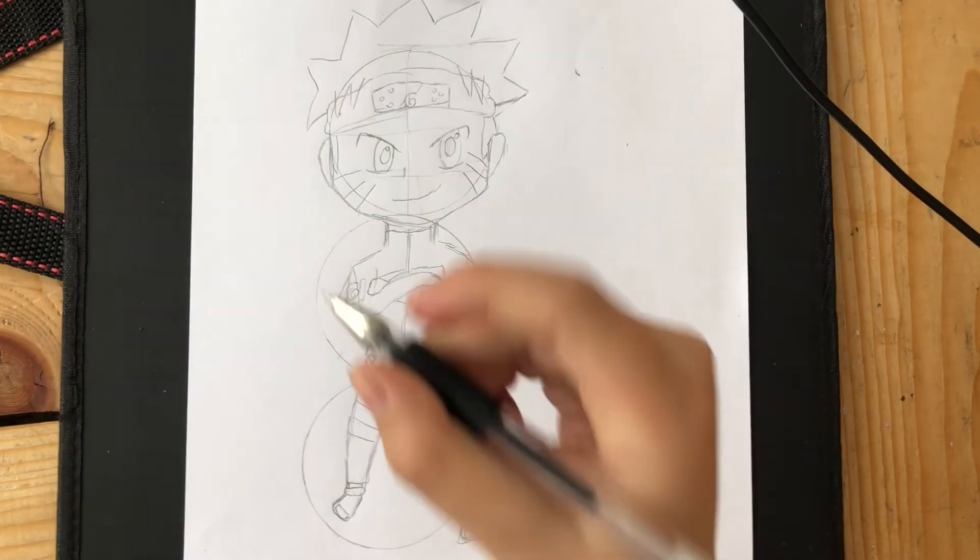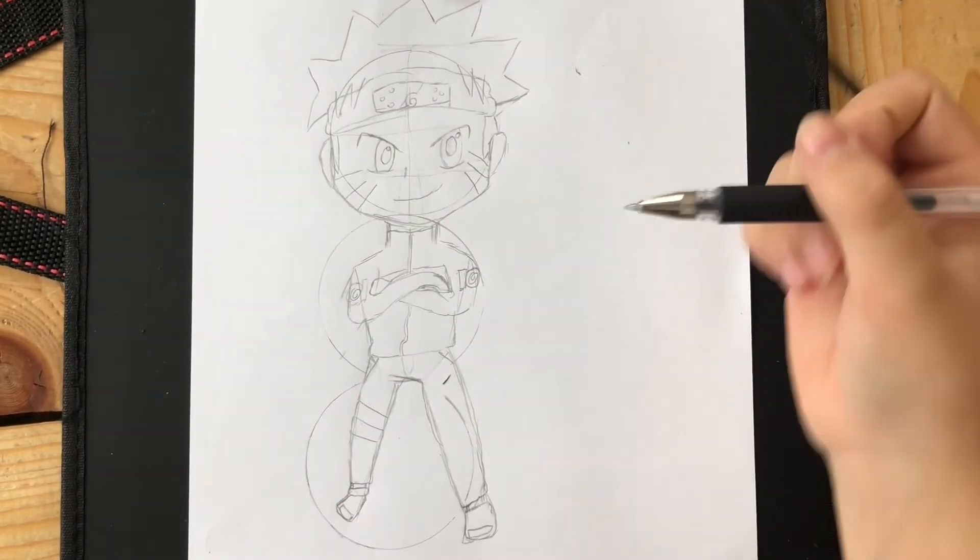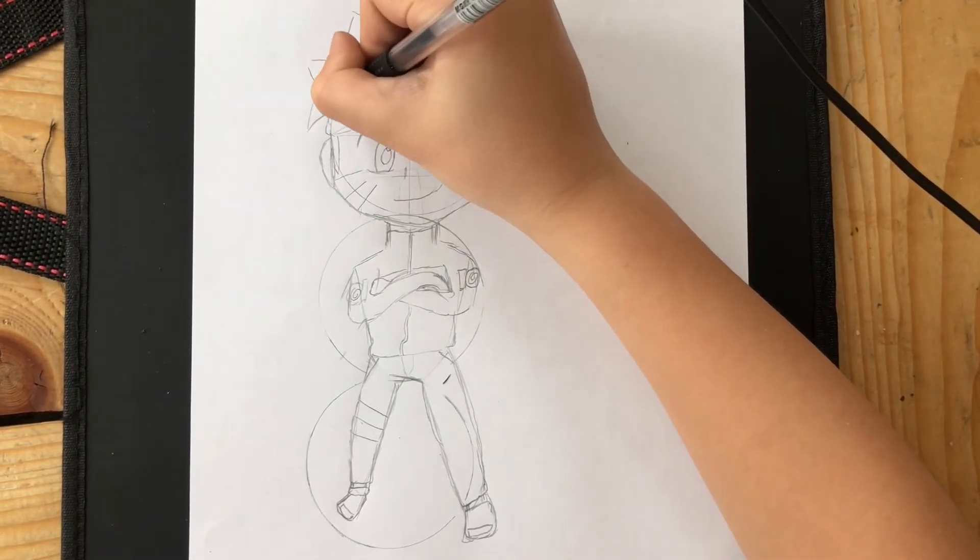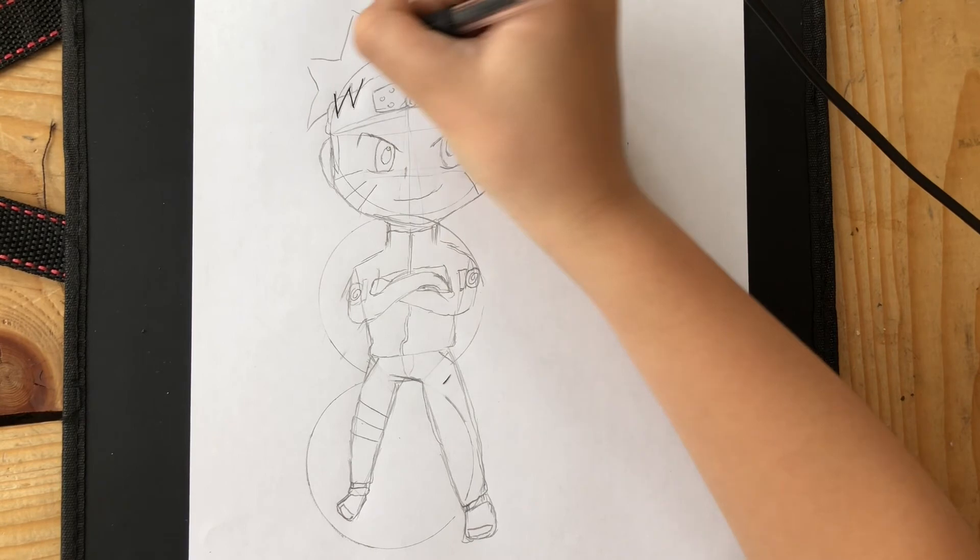Then when you're finished, we can start the tracing. It's super simple, but remember not to trace the circles and not the underwear. You can erase that after you finish tracing.